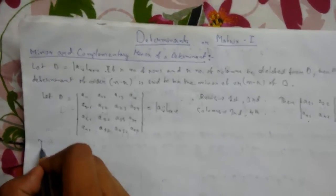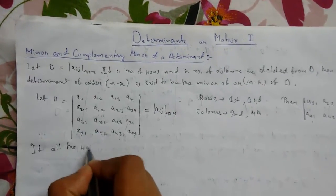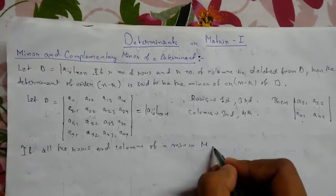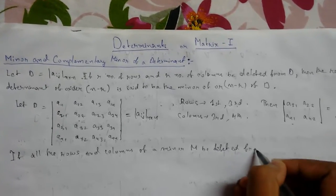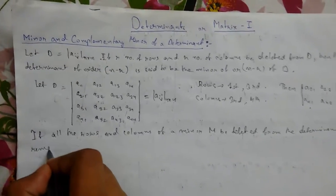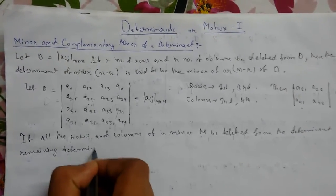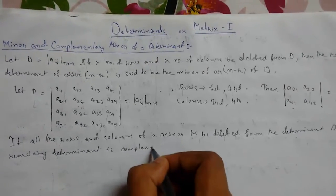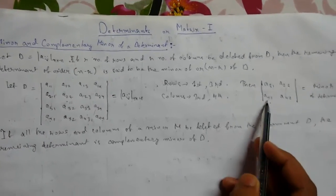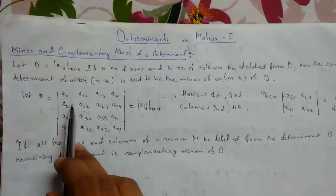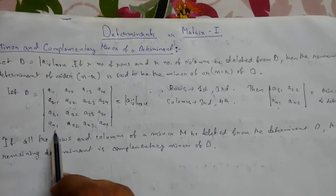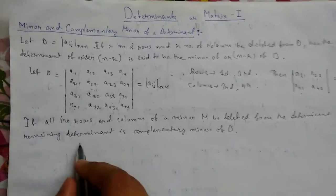Now for the complementary minor: if all the rows and columns of a minor M are deleted from the original determinant D, then the remaining determinant is known as the complementary minor of D. For this case, if we delete these rows and columns from the original, certain rows and columns go out.